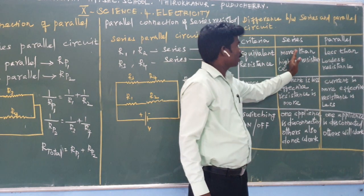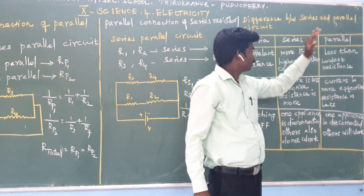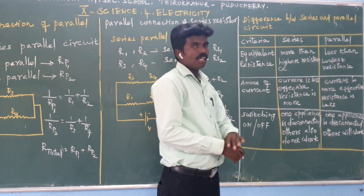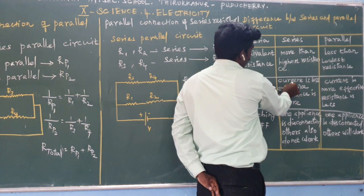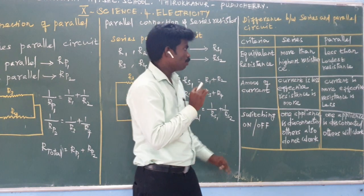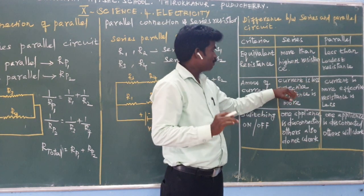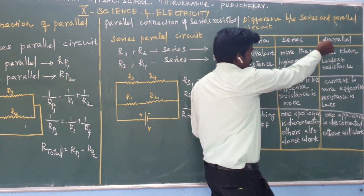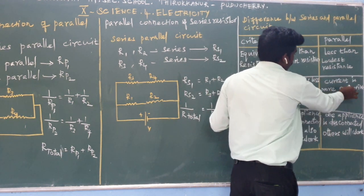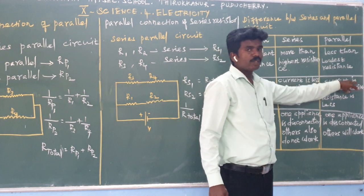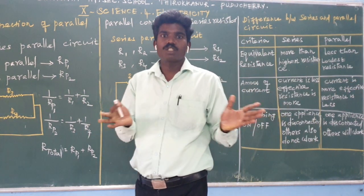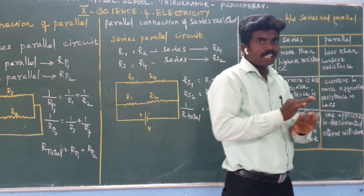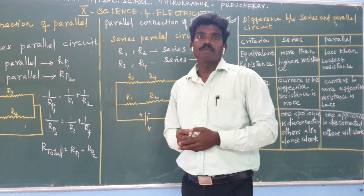In both ways, the equivalent resistance in the parallel combination is less. The second criteria is the amount of current. In a series circuit, the current depends on the resistance — when resistance is high, current is less. But in a parallel circuit, the resistance value is lower, so the current is more. However, the current is split across the branches.